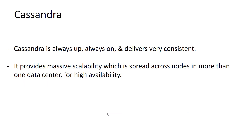Cassandra is always up, always on, and delivers very consistent performance. It is very good for handling big data applications. It provides massive scalability spread across nodes in more than one data center for high availability. Whenever your application needs to be deployed across different regions, Cassandra is the best database.